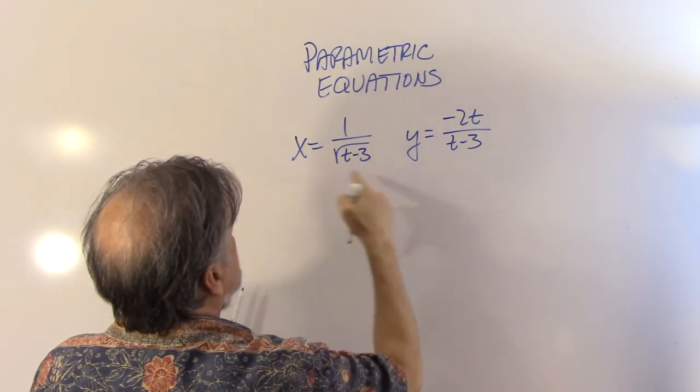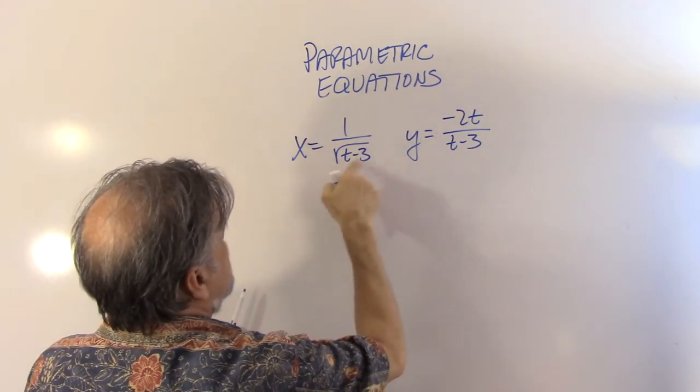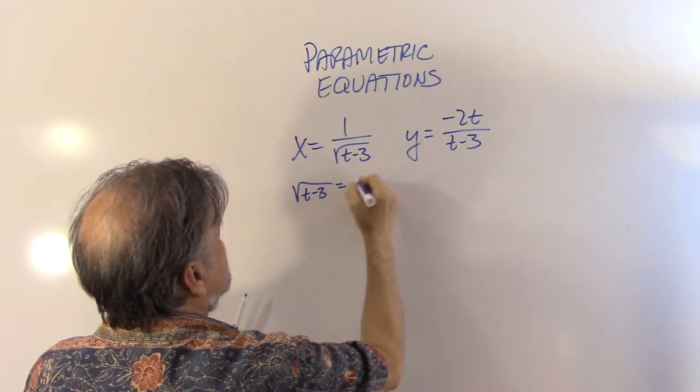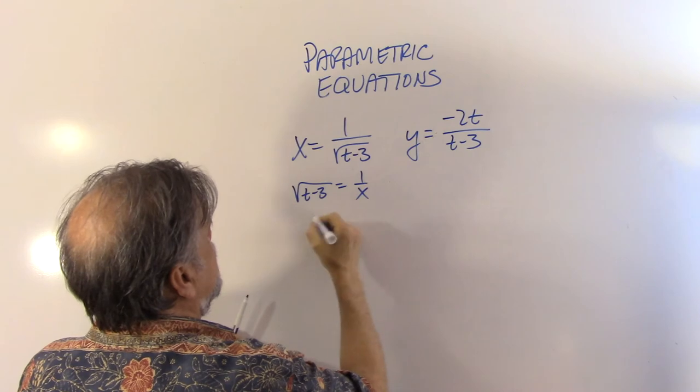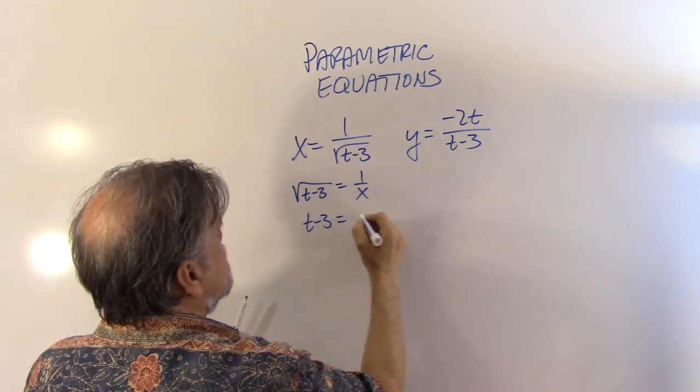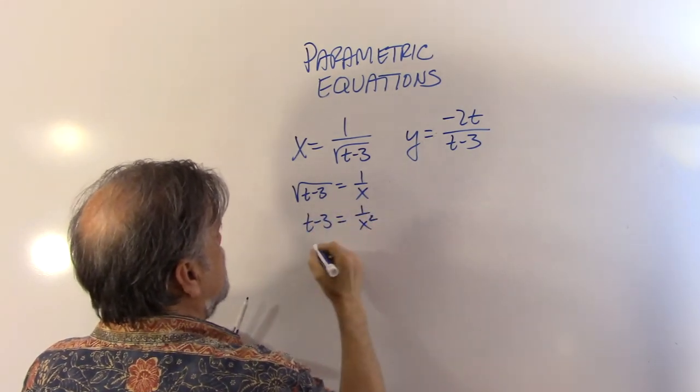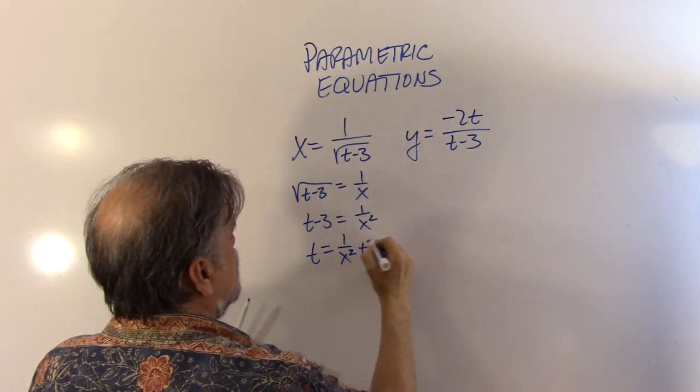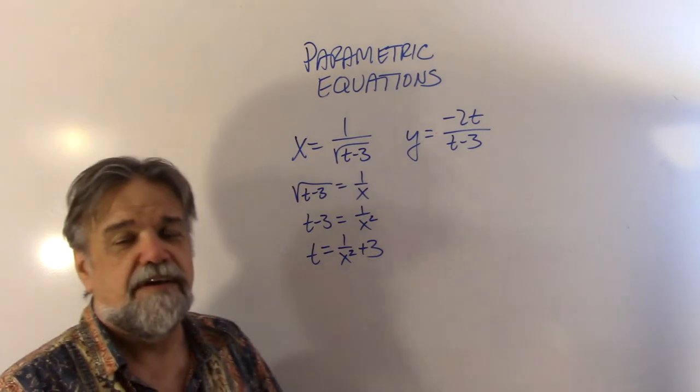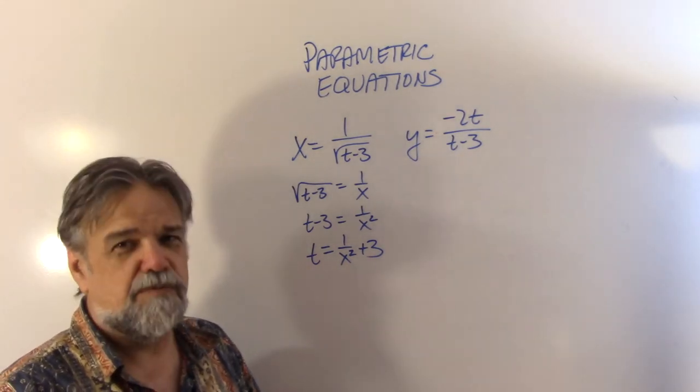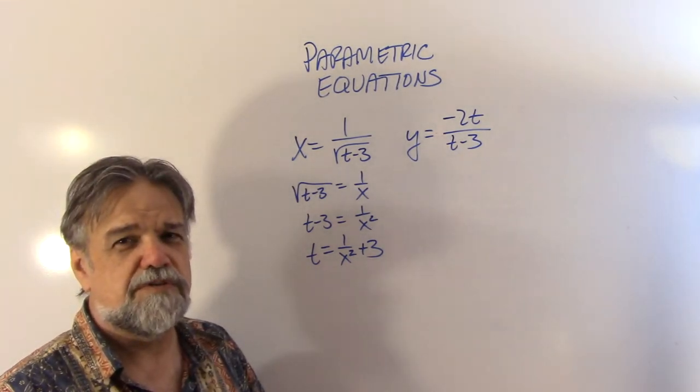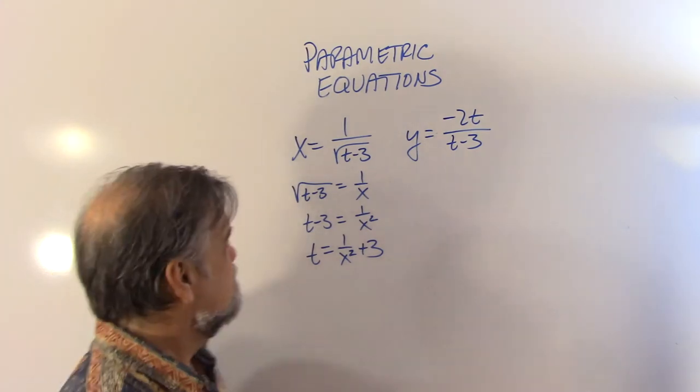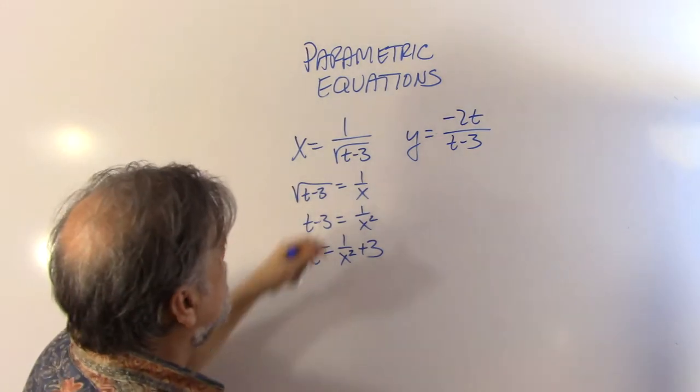So let's see. If I multiply both sides by the square root and divide both sides by x, I get the square root of (t-3) equals 1 over x. And then t minus 3 must equal 1 over x squared. So t is 1 over x squared plus 3. Now, some of y'all might be looking and be going, whoa, hold it. You just squared both sides. You've got to be careful when you square both sides. That's true. You do.